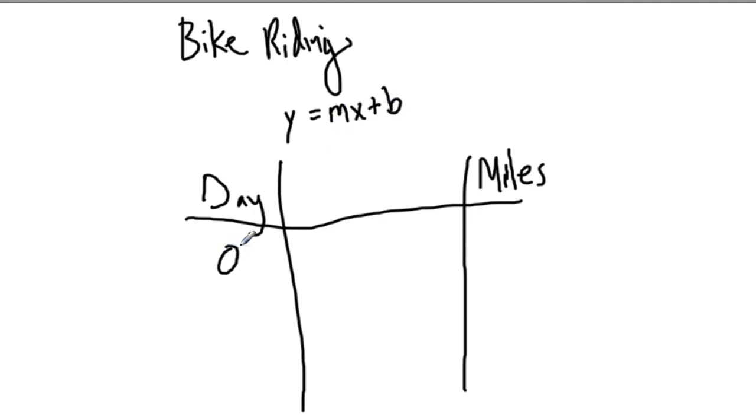So on day zero, before you even start, really, how many miles do you have on your bike? Well, it depends on the story. In this case, you have 150 miles. Now, day one. Well, let's say we're going to ride 30 miles each day. So at the end of day one, what are the total miles that you have on your bike? You'd have 180 miles. Day two and three. Let's go through three days of this. On day two, you're riding 30 miles each day, and you'd have 210 miles. And then day three, you would have 240 miles on your bike.